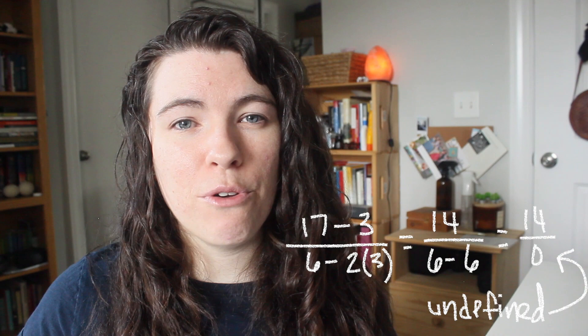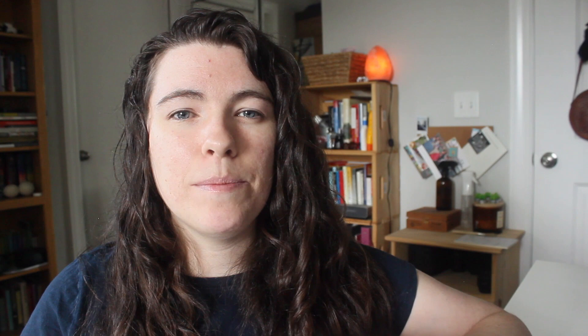Number four: you need to have an understanding of absolute value — the distance that a number is from zero on a number line. You need to be able to apply this to find the distance between two numbers on a number line, usually a positive and a negative number. Number five: you need to be able to determine when an expression is undefined. The big reason this happens is when you try to divide by zero, which is not possible. If you end up with a zero in the denominator of a fraction, that problem is undefined.